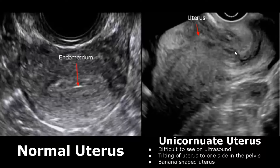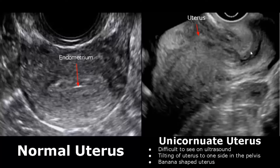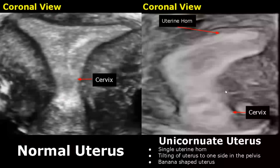A unicornuate uterus will have only one uterine horn connected to only a single fallopian tube. It is difficult to see on 2D ultrasound — we may see tilting of the uterus to one side in the pelvis. A unicornuate uterus has a banana shape and is seen very well in a 3D coronal image, where only a single uterine horn is found and the banana-shaped uterus is tilted to one side.